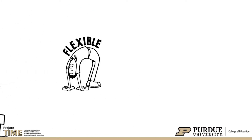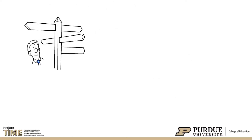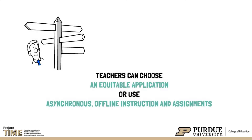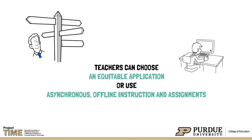Following basic troubleshooting actions will not always help students resolve technology problems. It is important for teachers to remain flexible and be creative. If a solution to the technology problem is not found, it is essential to find an alternative option for students to continue learning. Teachers can choose an equitable application as a substitute or utilize asynchronous offline instruction and incentives.